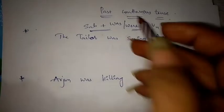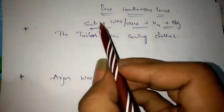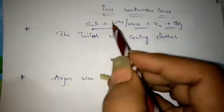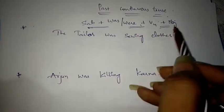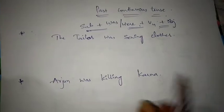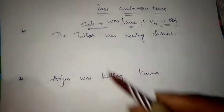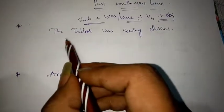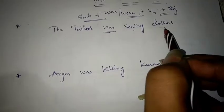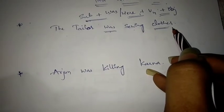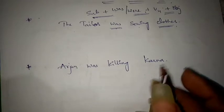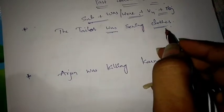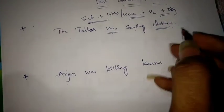Now let us go to the next tense: past continuous. The formula for past continuous tense is: Subject + was/were + V4 + object. The two examples are: 'The tailor was sewing clothes' and 'Arjun was killing Karna.' Let us start converting these active voices into passive voice.